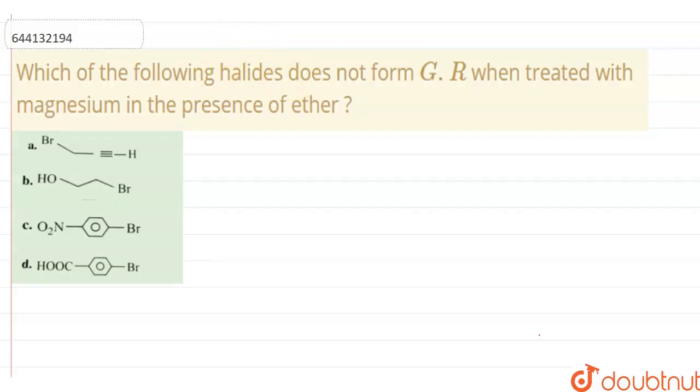Hello everyone, let's start the question. Which of the following halides does not form Grignard reagent when treated with magnesium in the presence of ether?